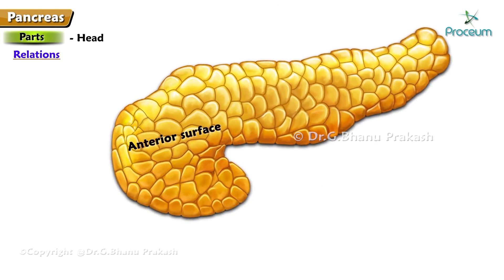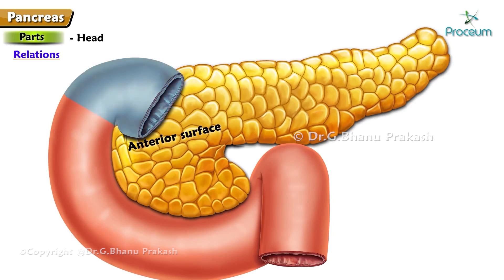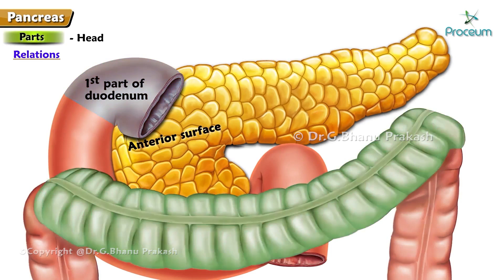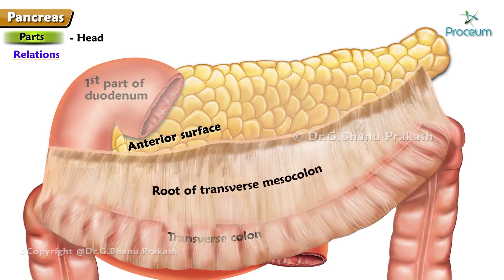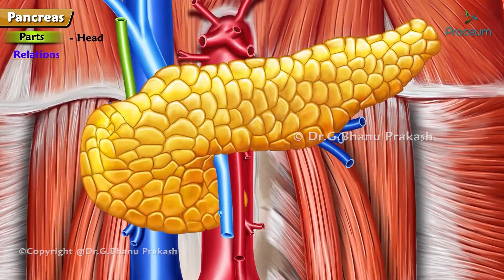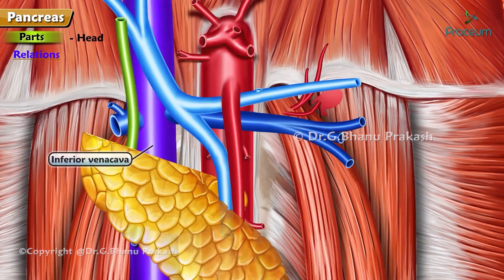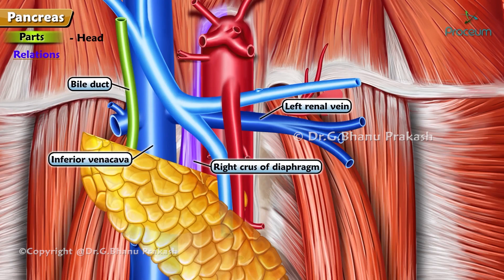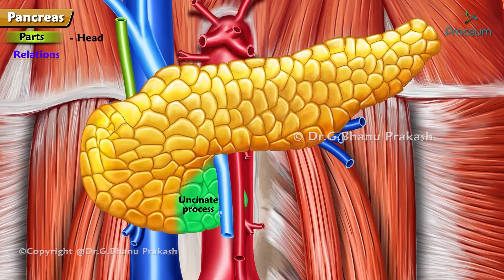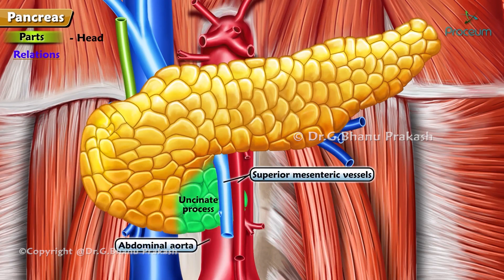Relations of the head: from above downward, the anterior surface is related to the first part of the duodenum, transverse colon, root of the transverse mesocolon, and jejunum. The posterior surface is related to the inferior vena cava, left renal vein, bile duct, and right crus of the diaphragm. The uncinate process is related anteriorly to the superior mesenteric vessels and posteriorly to the abdominal aorta.